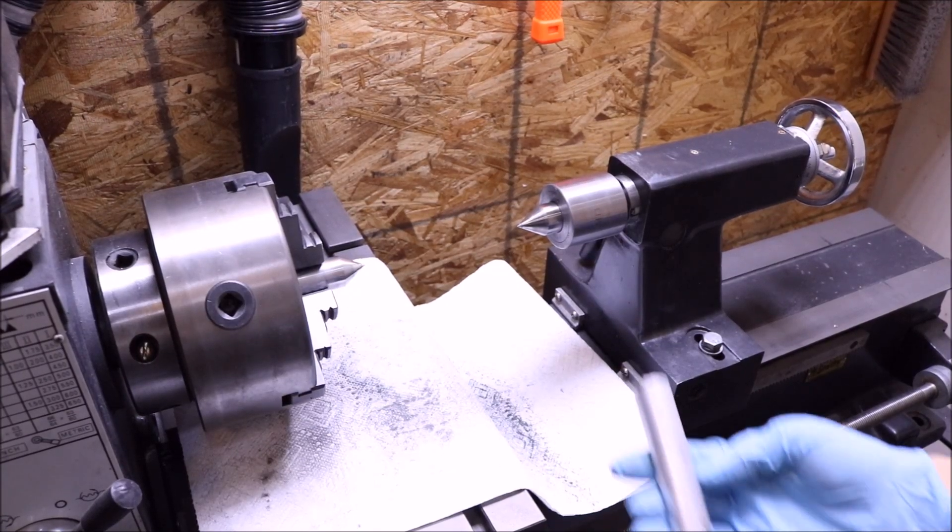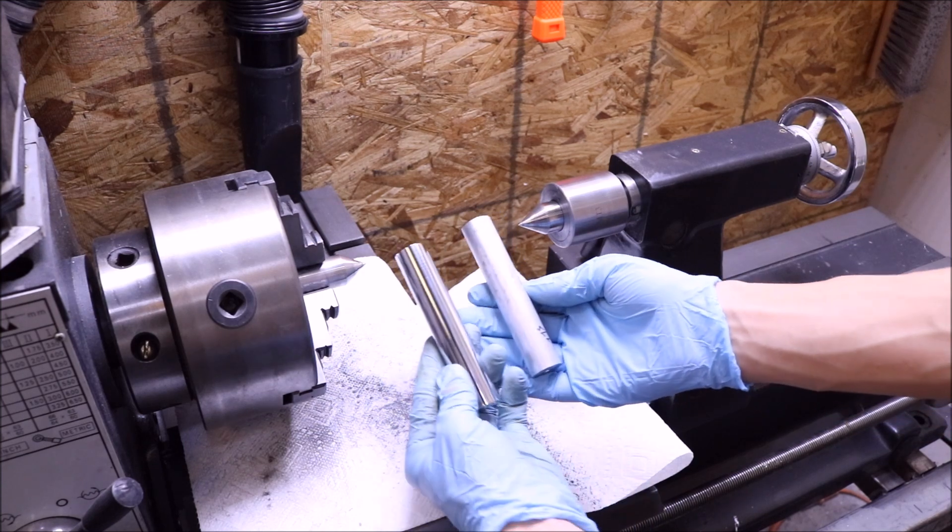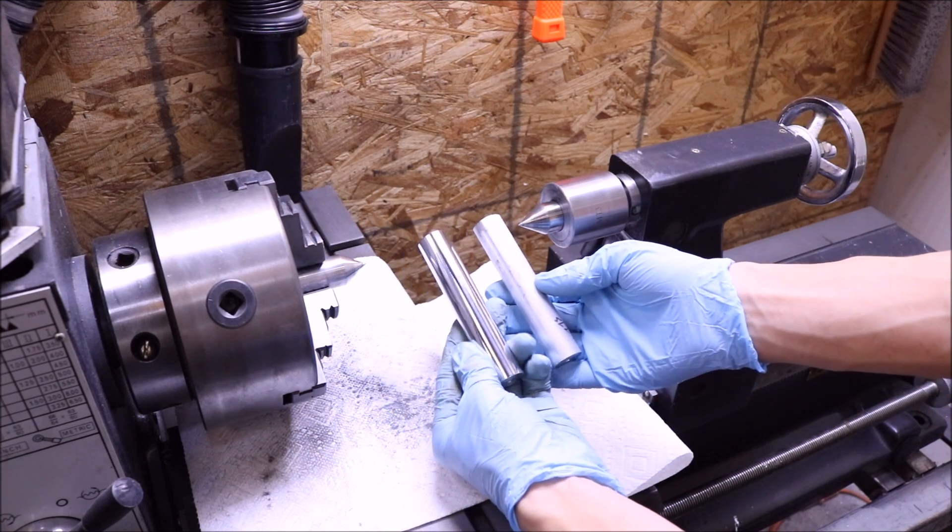In this video I'd like to show you how I take mill finish aluminum rod and turn it into a glossy polish for an ultra smooth surface.